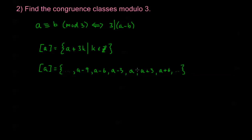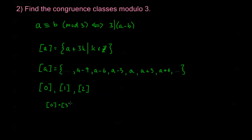When I start plugging in repeated numbers, every time I can write a number as 3 plus something, I can take that 3 away and it resolves to a previous class. So I only have 3 unique congruence classes, and I can represent those by 0, 1, and 2. Plugging in larger values of a, we see that [0] is the same as the equivalence class generated by 3, by 6, etc. Similarly, [1] is the same congruence class as [4], which is the same as [7], and so on.